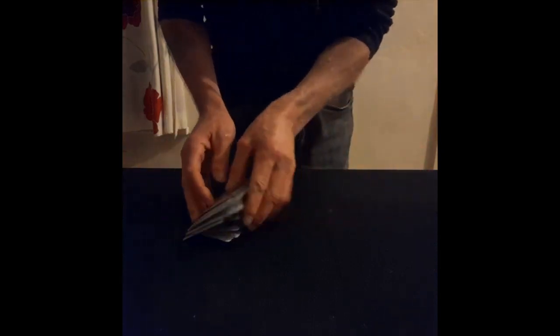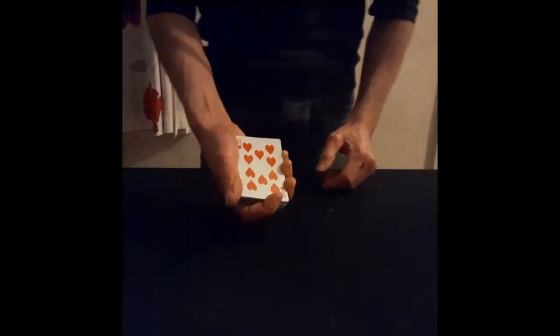So here's the idea: if we had a spectator here, I would riffle through the deck and then they'd say stop whenever they want. So here goes... stop. Assuming they're happy with this card here, I will turn it over and see what card they stopped on. In this case, it is the 10 of hearts.